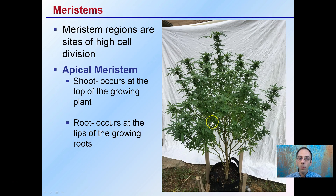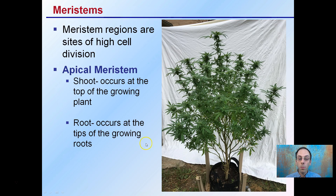Meristems are the regions and sites of high cell division. The apical meristems are the shoot meristems located at the top of the plant. You can see an apical meristem here, where all of the meristematic tissues of the shoots appear. This would most likely be the apical if you're growing a plant in one single way, while these could be laterals based on different pruning methods. Keep in mind there are also meristems in the roots, occurring at the very tips of the ever-growing roots.